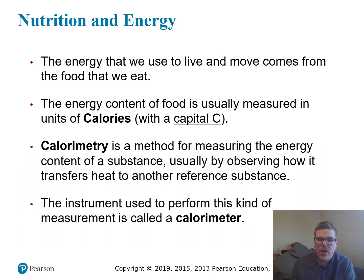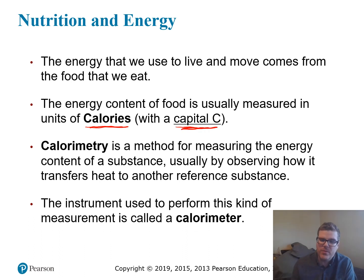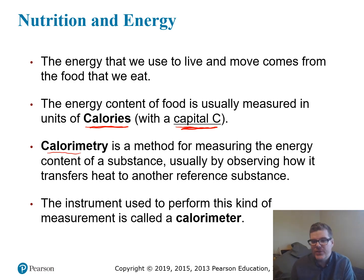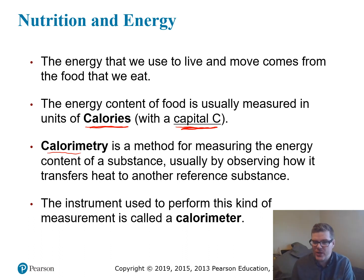Today we're going to talk a little more about the kind of energy stored in food. Food energy is typically measured in calories — but these are calories with a capital C, which makes it a little different from the calorie unit we've been dealing with. Calorimetry is the method for measuring the energy content of a substance like food. You burn the substance to release energy, which transfers into a reference substance, and by observing the temperature change of the reference substance, you can calculate how much energy was transferred. The instrument used to do this is called the calorimeter.